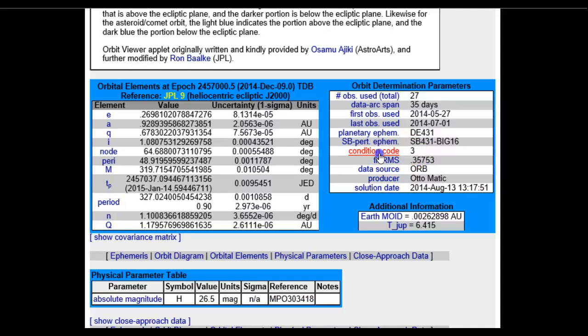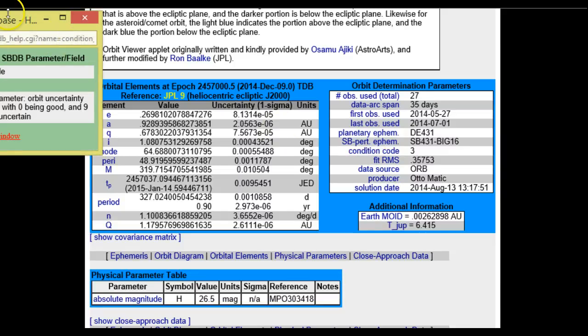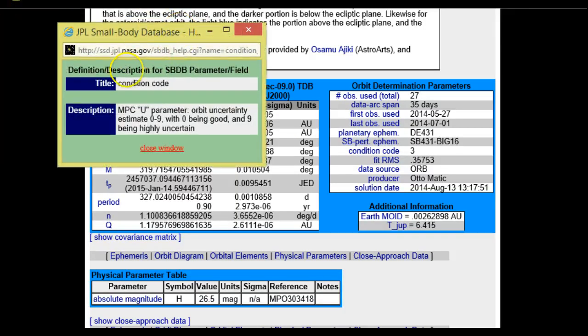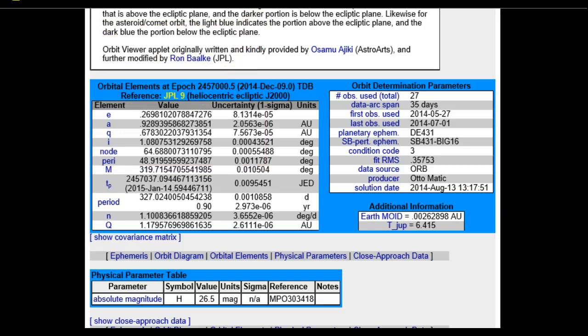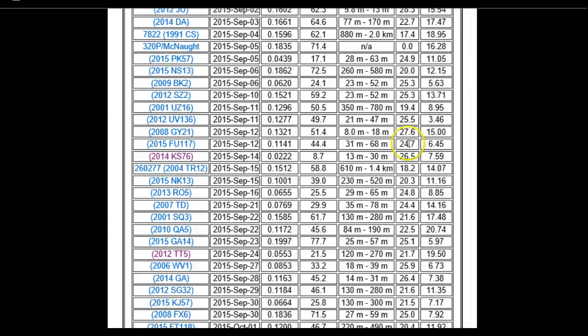If you scroll down, it'll give you other information about that object. It'll say condition code 3. Condition code is just how likely it is to have, condition code MPCU parameter orbit certainty estimate 0 to 9 with 0 being good. That's not going to cause any problems and 9 being highly uncertain. The closer it is to 9, they're not certain of its exact orbit and the possibility of having anything happen with it.